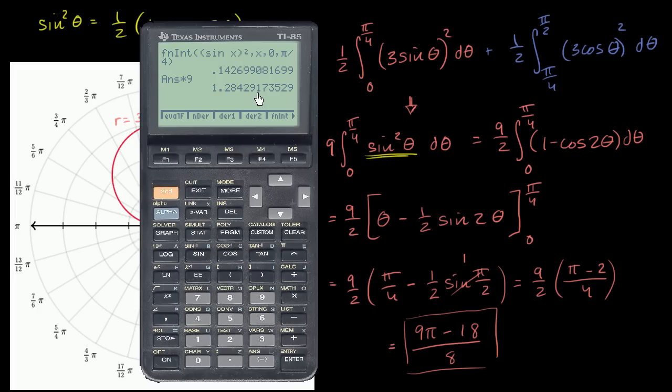So let's verify that that's the same exact value we got when we actually evaluated the integral by hand. So if we take nine, nine pi minus 18 divided by eight, divided by eight, what do we get? We get the exact same value.